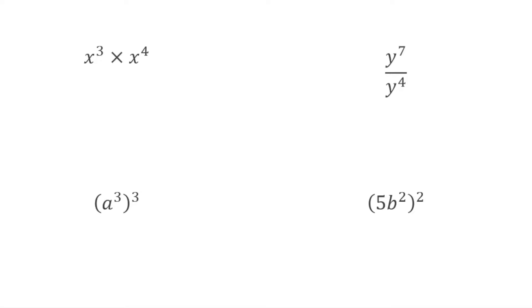Our first indice law is going to be where we multiply powers of the same base. In this scenario, we actually have to add the indices. So for this first example, we've got x cubed multiplied by x to the power of 4. With those two indices, I have to add them together. So 3 add 4 is 7, and that simplified would just be x to the power of 7.